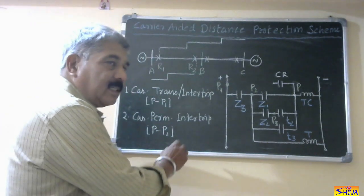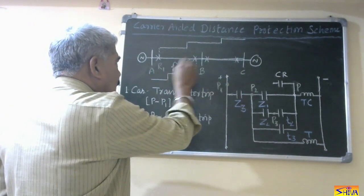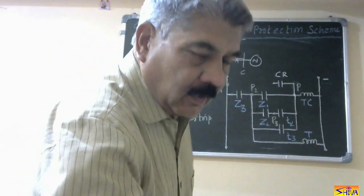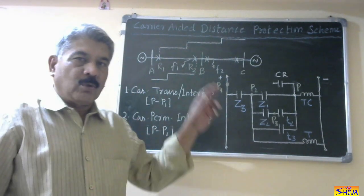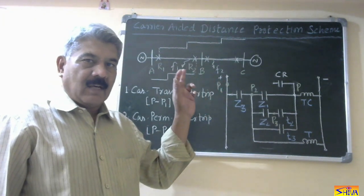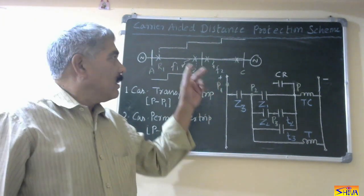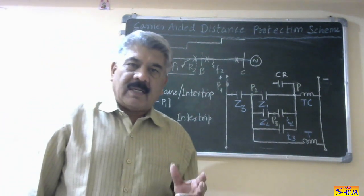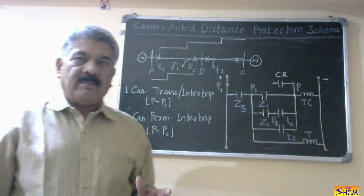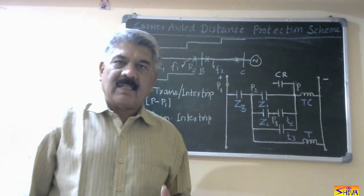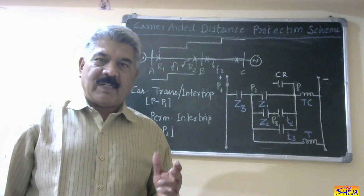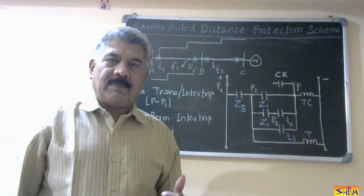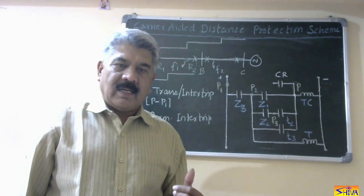Now let us consider two faults, F1 and F2. F1 and F2 both are in the second step of relay R1. The difference is F1 is an internal fault whereas F2 is an external fault. In the carrier-aided distance protection scheme, carrier signals — that is, very high frequency signals — are transmitted from one end to the other end in order to cause simultaneous tripping of the relay at both ends.